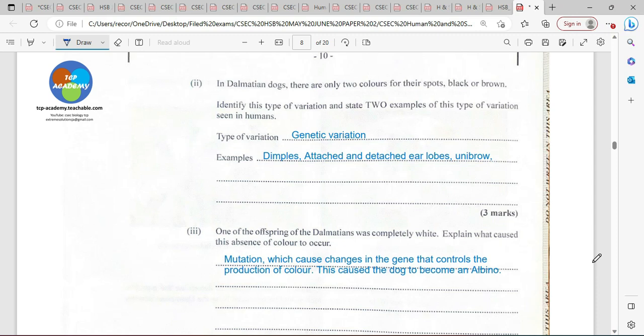Now, an example of this is going to be dimples. It's either you have dimples or you don't. It's either black or brown. It's either you have attached earlobe or detached earlobe. It's going to be whether you have unibrow, that eyebrow coming right across or you don't have a unibrow.